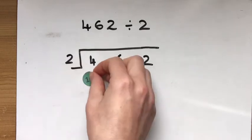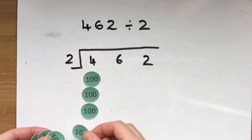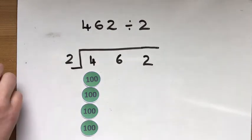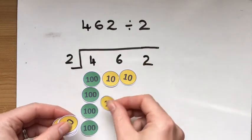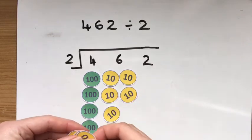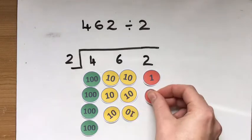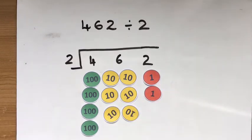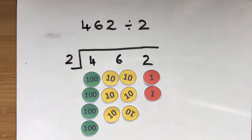So just like before, I'm going to put my four hundreds. Might have to squish them a little bit on this one. My six tens. And my two ones. And I'm going to have a look and see how many groups of two I can get out of them here.